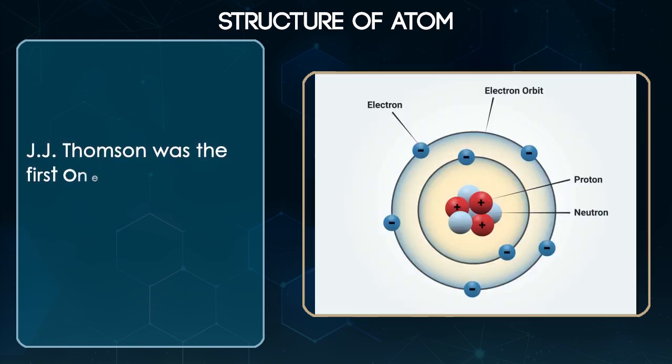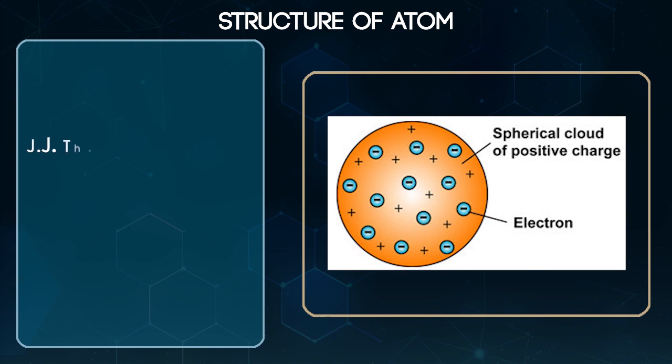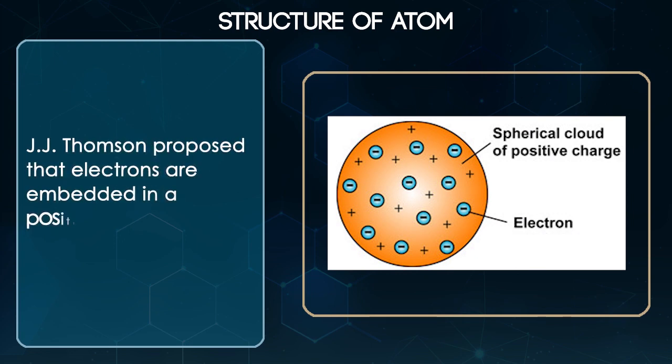J.J. Thomson was the first one to propose a model for the structure of an atom. Thomson proposed that electrons are embedded in a positive sphere.